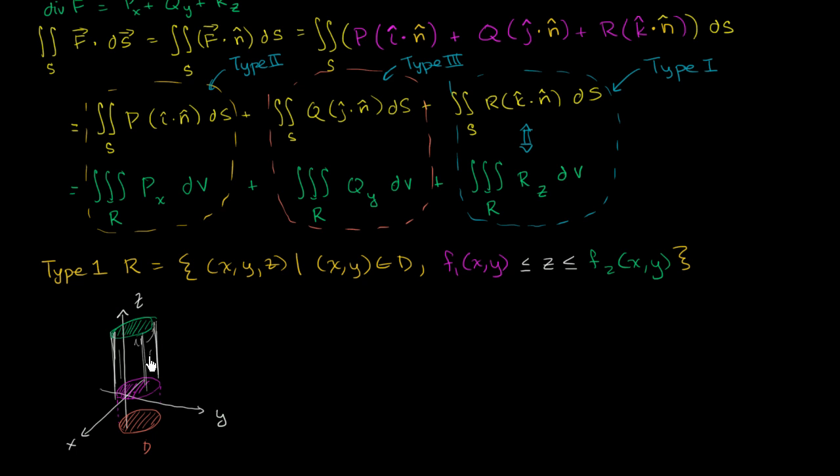Now, a type 1 region, you can kind of think of it, it can be broken up into three parts. It can be broken up into surface, or the surfaces of a type 1 region, I should say, can be broken up into three parts. It can be broken up into, let's call that surface 1. Surface 1, let's call this surface 2.